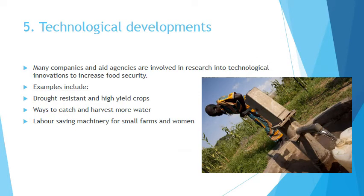Technological development also affects how much food is available. A lot of aid agencies are now involved in research to create technology in developing countries to increase food availability and distribution. Examples include drought-resistant crops, harvesting water, and creating labour-saving machinery for small farms and women. This is how aid agencies can go in and actually change the lives of people in developing countries.